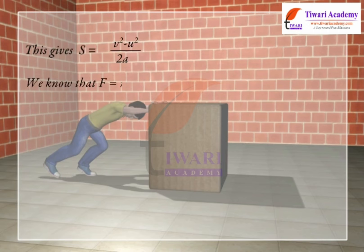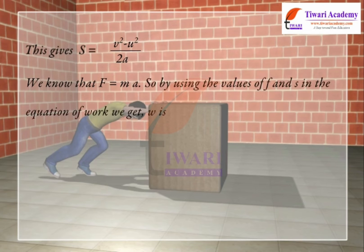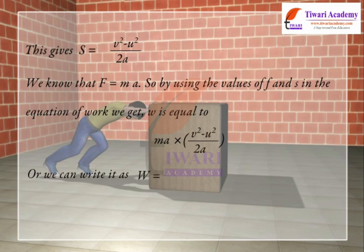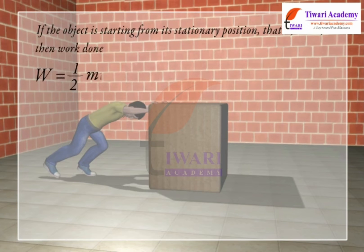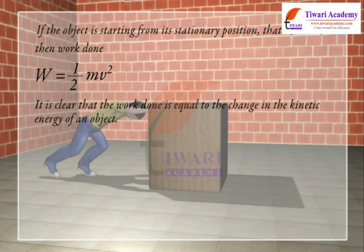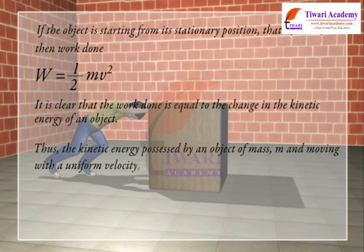We know that F = MA. So, by using the values of F and S in the equation of work, we get W = MA × (V² − U²) / 2A, or W = ½M(V² − U²). If the object is starting from its stationary position, i.e., U = 0, then work done W = ½MV². It is clear that the work done is equal to the change in the kinetic energy of an object. Thus, the kinetic energy possessed by an object of mass M moving with a uniform velocity V is: Ek = ½MV².